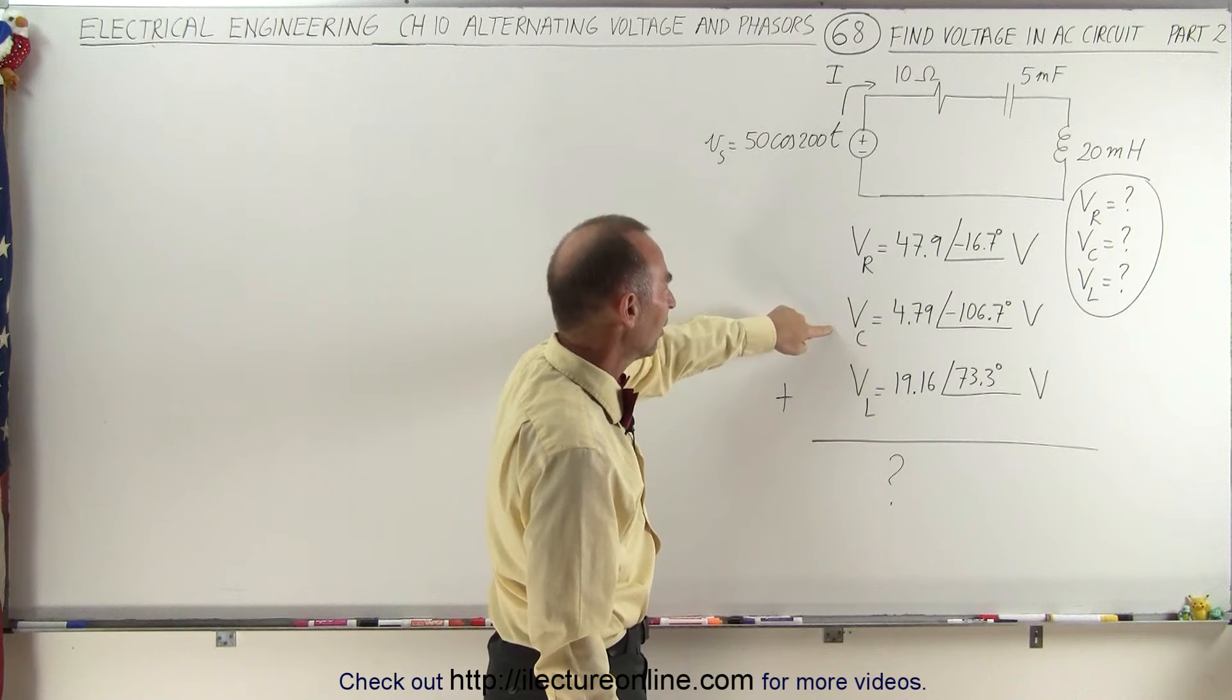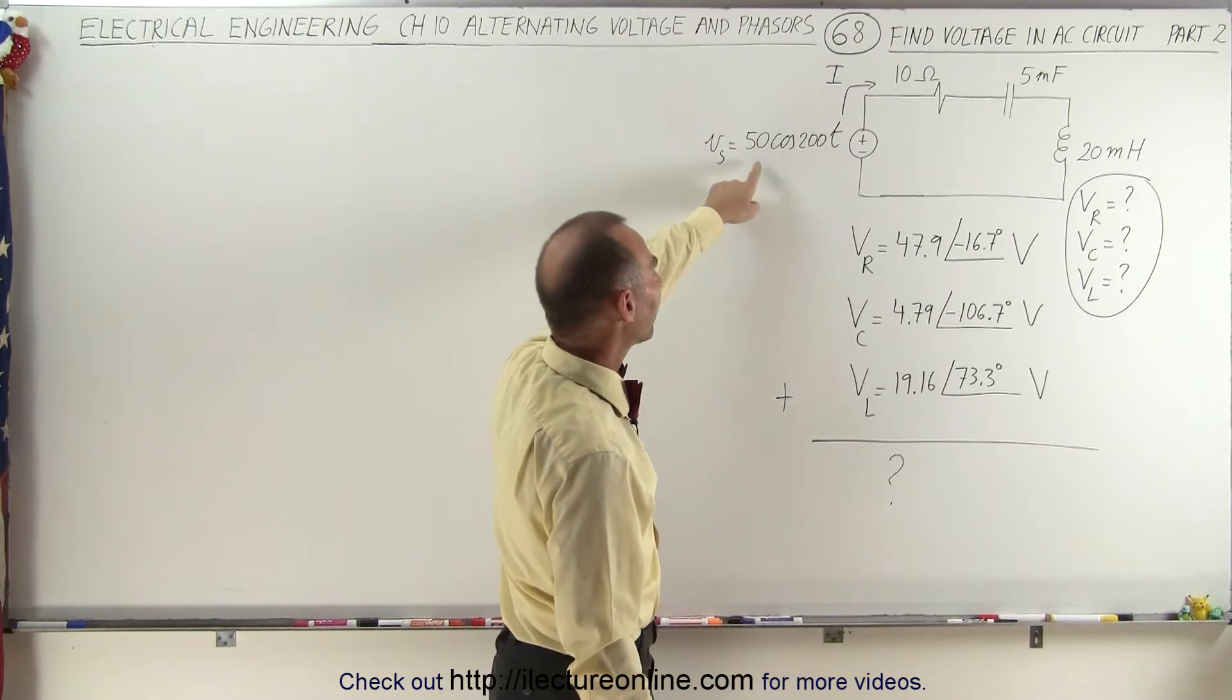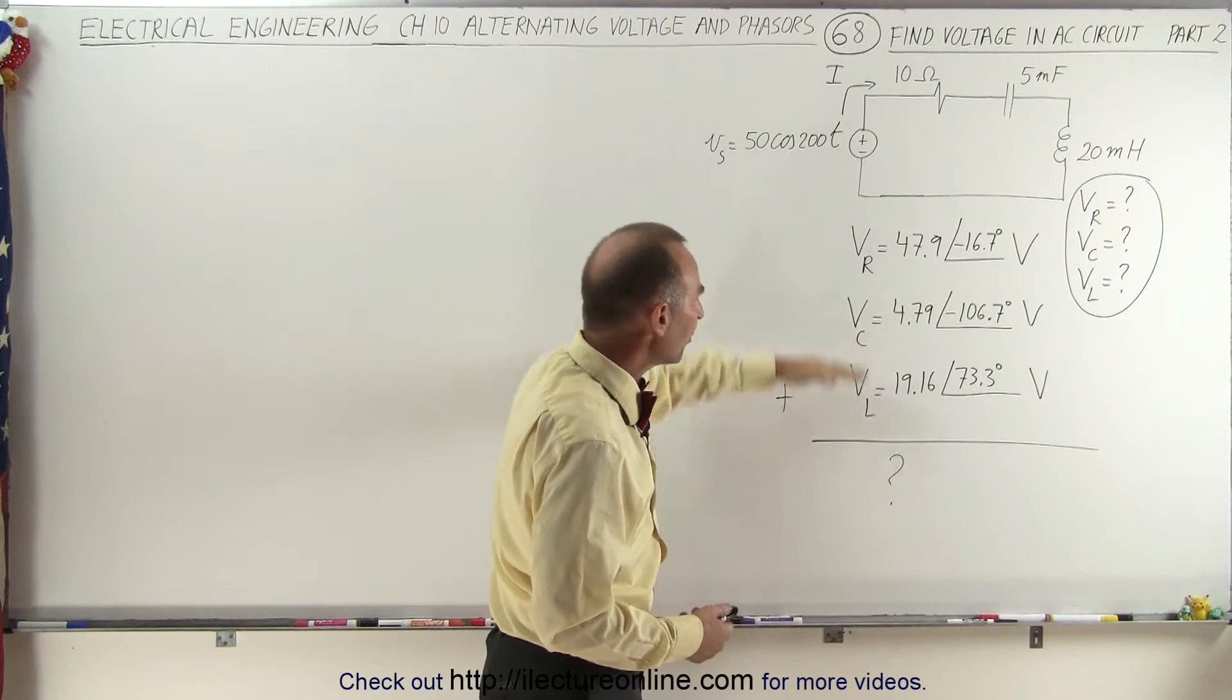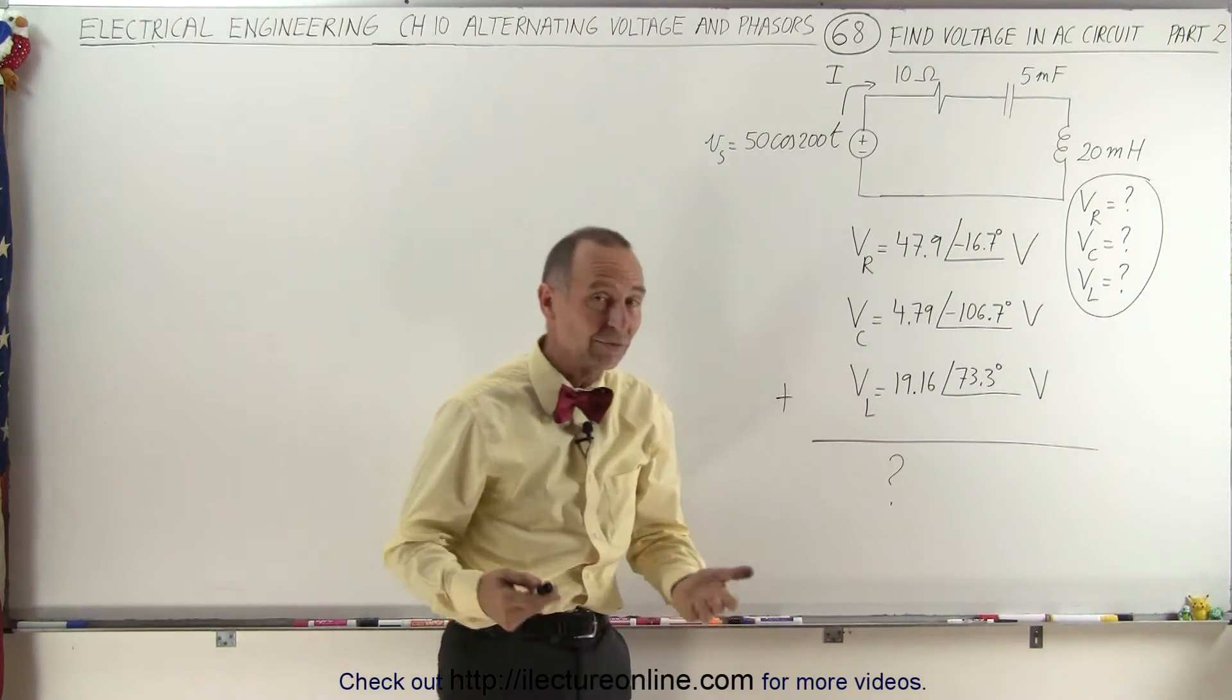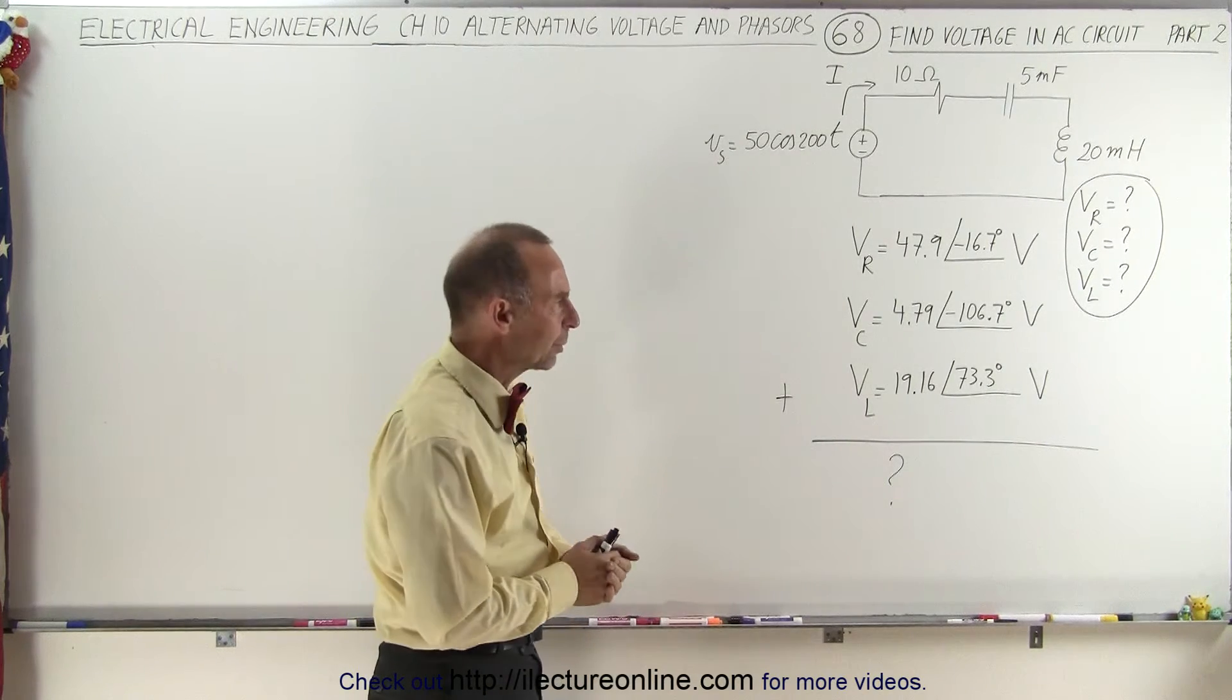The voltage across the resistor, across the capacitor, and across the inductor. And knowing that the voltage source has a magnitude of 50 volts, if we add these three voltages together we get something much bigger than 50 volts, so something doesn't seem to add up correctly.